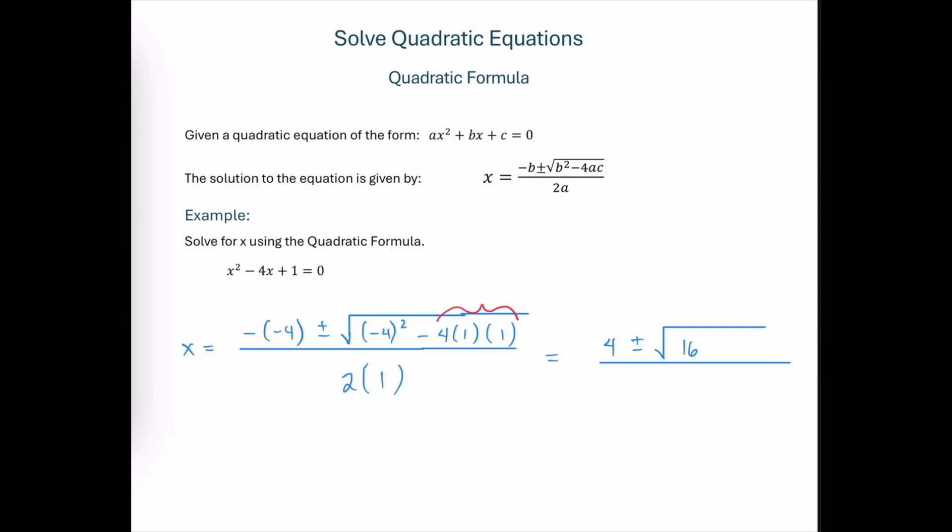And from that, we're going to be subtracting this product of 4 times 1 times 1. So we're subtracting 4 from 16. And in the denominator, we have 2 times 1, which is just 2. I'll start the new line with x is equal to as a visual reminder that this is the solution for x, so I'm constantly aware of the left-hand side of this equation. And we have 4 plus or minus the square root of 16 minus 4 is 12, and then we divide that by 2.